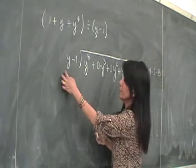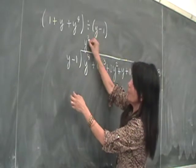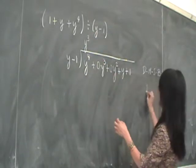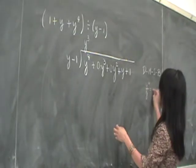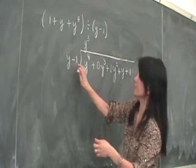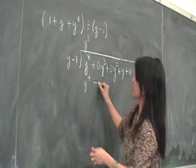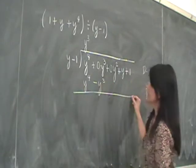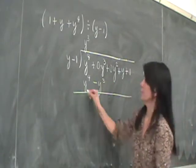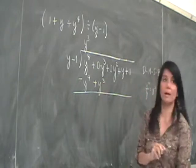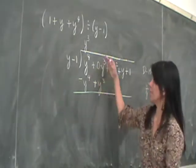Y cubed. We have y to the 4th over y will become y cubed, right? So we're doing this, which is y fourth. And then you multiply this to these two, so you'll have y fourth minus y cubed. Then what did we say we should do? Change the sign. We should change the sign to minus plus, right?